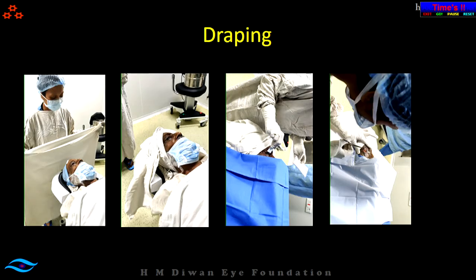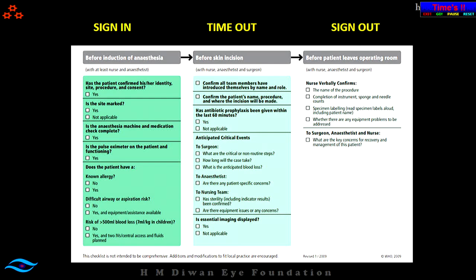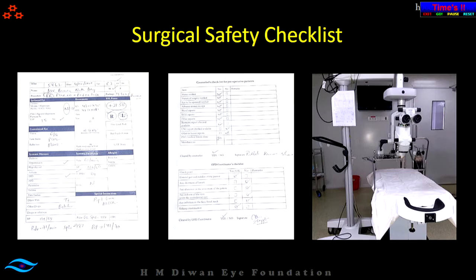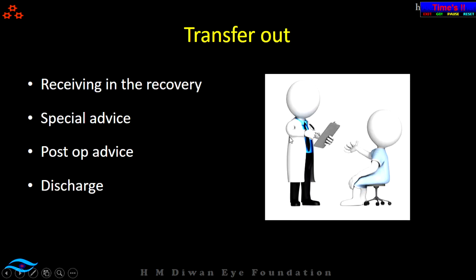The WHO surgical safety checklist can be adapted for your hospital. The pre-op list filled by the surgeon is attached to the microscope so it can be seen during surgery. When transferring out, be careful about any special advice and post-operative instructions. In the discharge summary, ensure it belongs to the correct patient, with diagnosis, surgery, admission date, and post-op instructions given legibly in the patient's language — avoiding terms like BID or QID and giving specific instructions. Also provide emergency contact phone numbers.